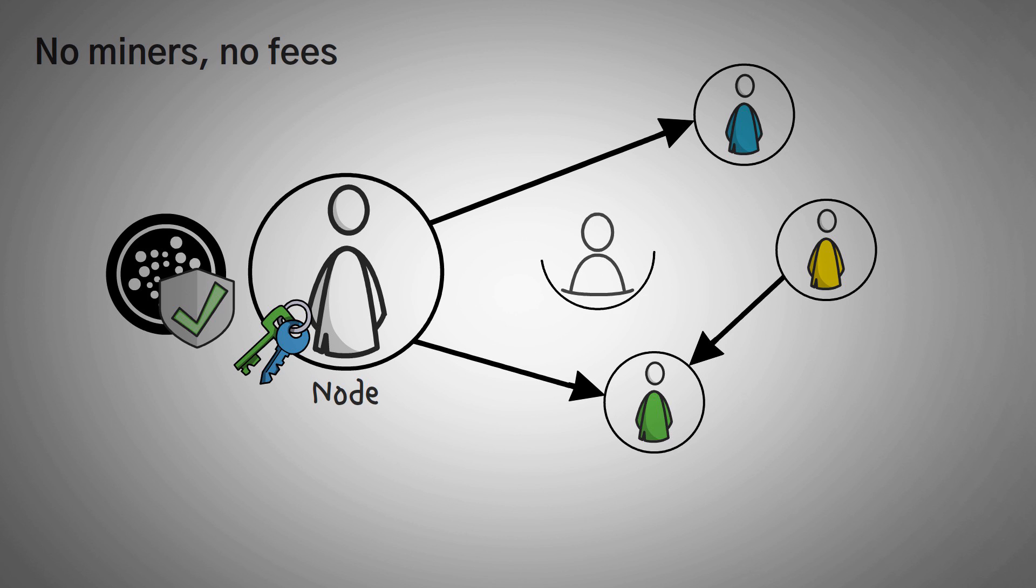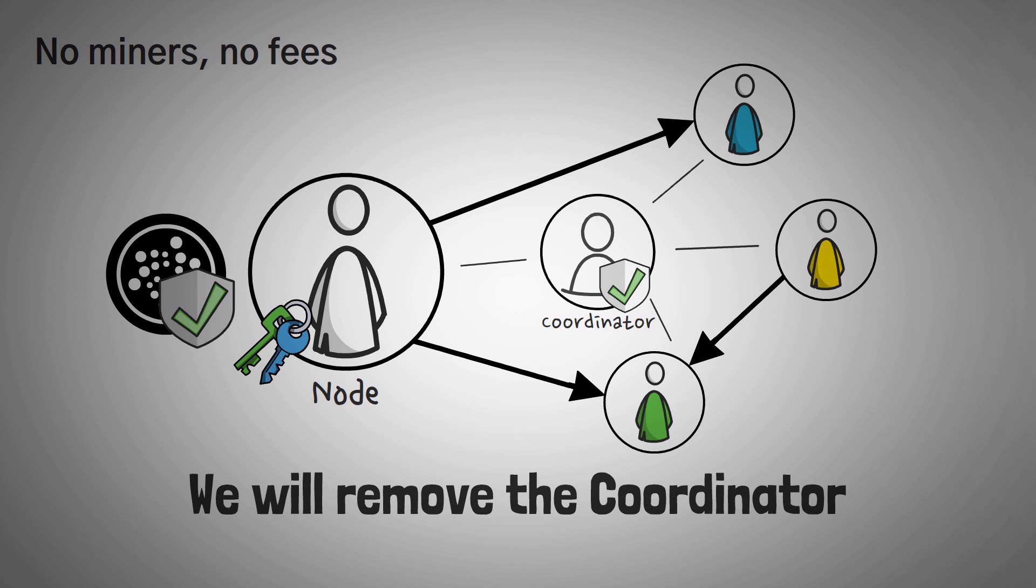Now, right now, there is a confusing thing called the coordinator, which makes IOTA pretty centralized, but it secures the DAG and is a rough replacement for miners and validators. In the future, though, IOTA has plans to replace the coordinator and make it much more decentralized. Moving on, one of the best use cases of IOTA is the fact that they have no fees.